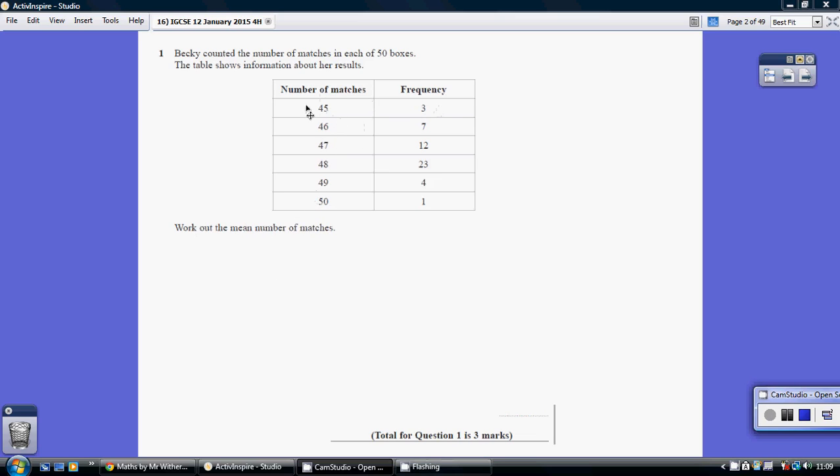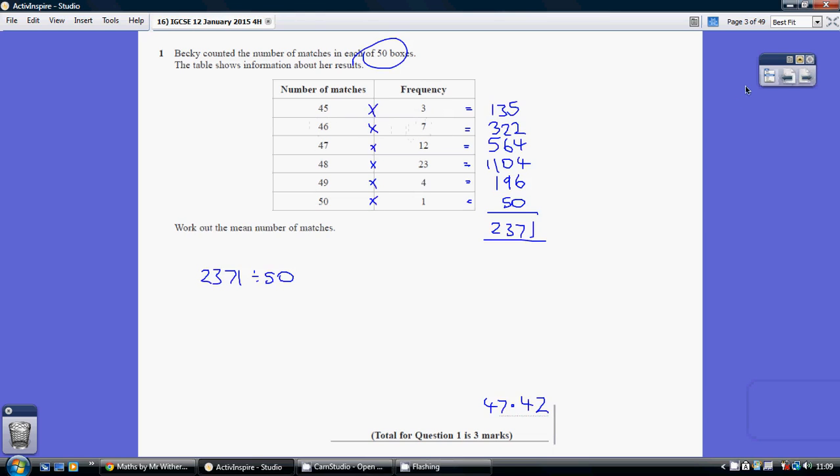We're saying 3 boxes contain 45 matches, 7 boxes contain 46 matches and so on. So how do we work out the mean? Well we need the total number of matches and we need to divide that by the number of match boxes.